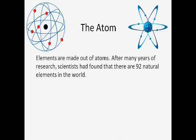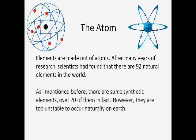Elements are made out of atoms. After many years of research, scientists have found that there are 92 natural elements in the world. As I mentioned before, there are some synthetic elements. Over 20 of them, in fact. However, they are too unstable to occur naturally on Earth.